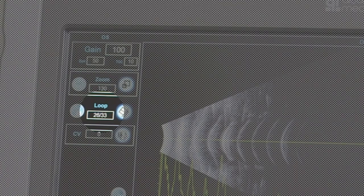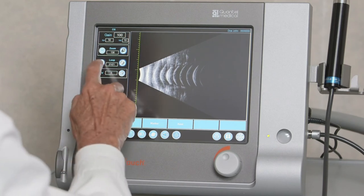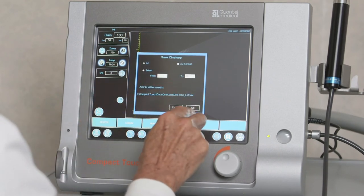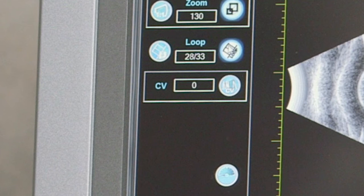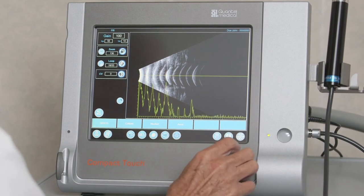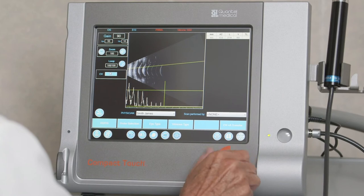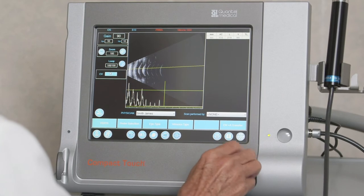The CineLoop function records a 10 second long video sequence corresponding to a maximum of 100 images and is activated with the CineLoop icon. The number of automatically recorded images is shown in the loop field and the sequence can be saved by selecting the loop save icon. Using the C-V function via the C-V icon on the left allows the examiner to add an A-scan cross-vector over the B-scan echograph. Changing the C-V value allows the examiner to move the C-V line up or down.